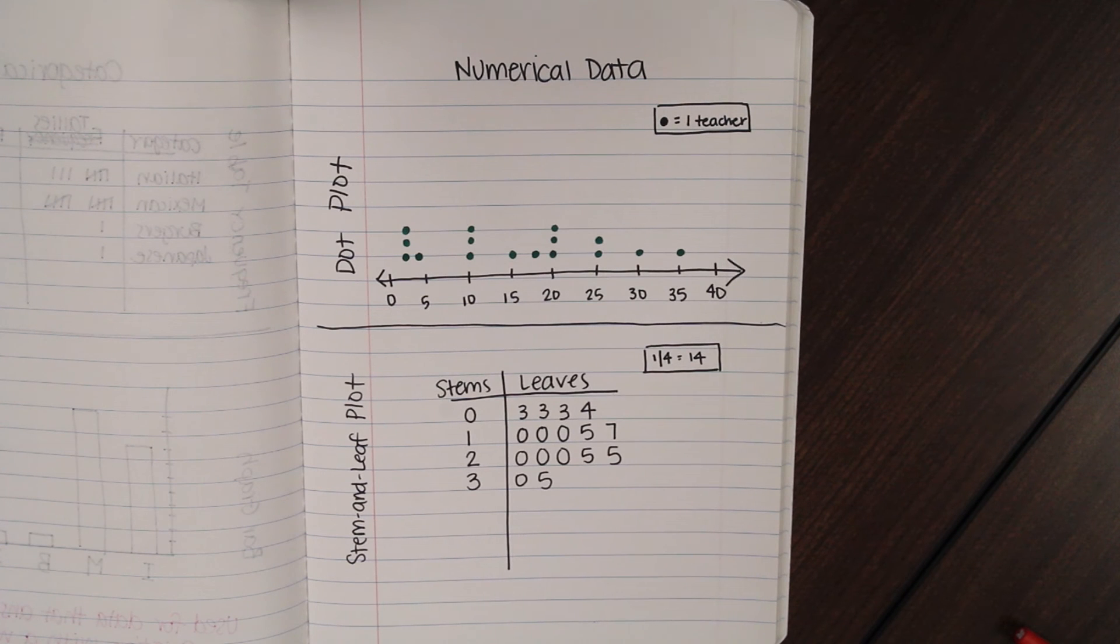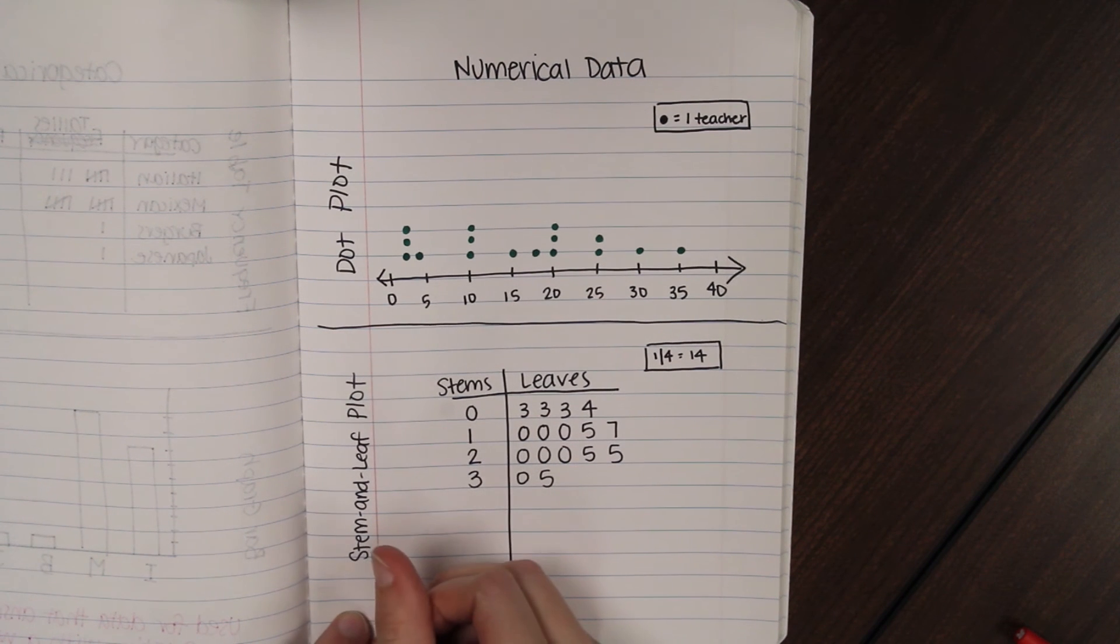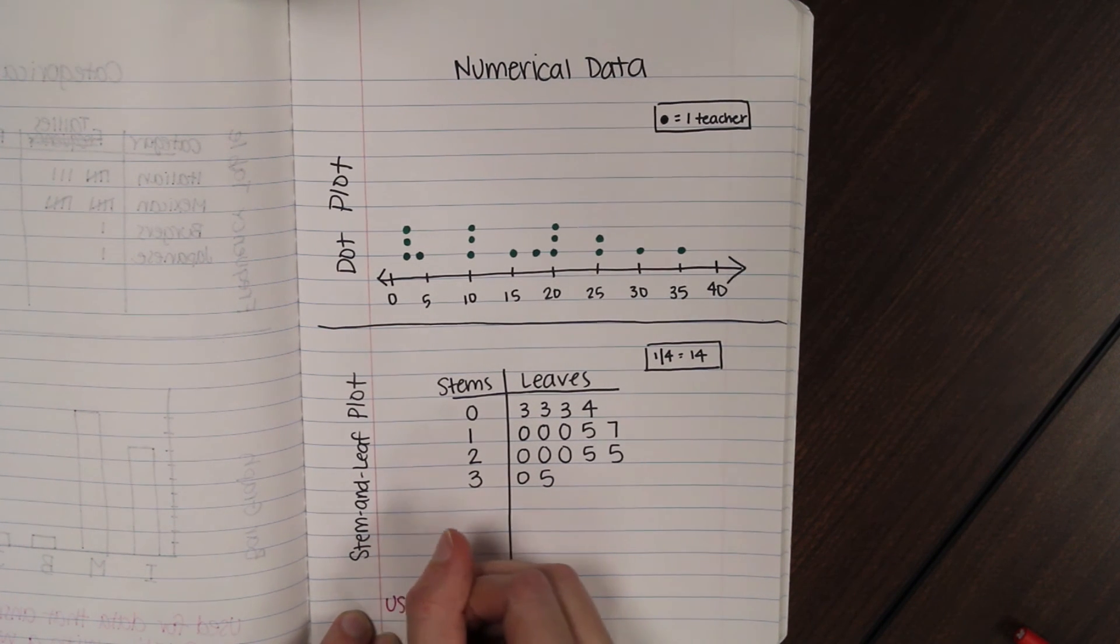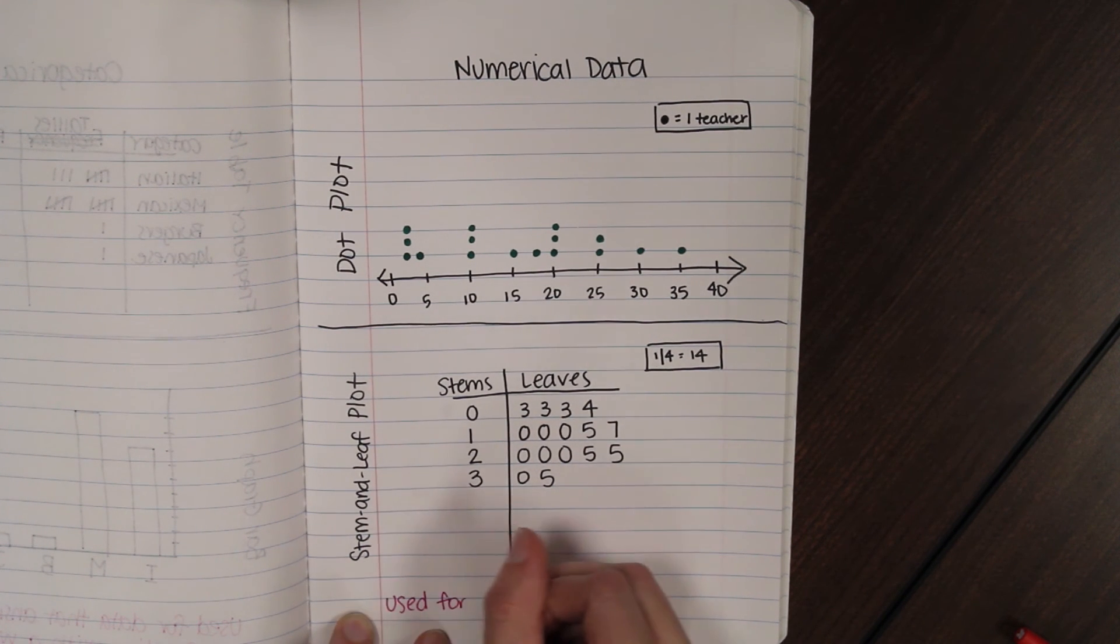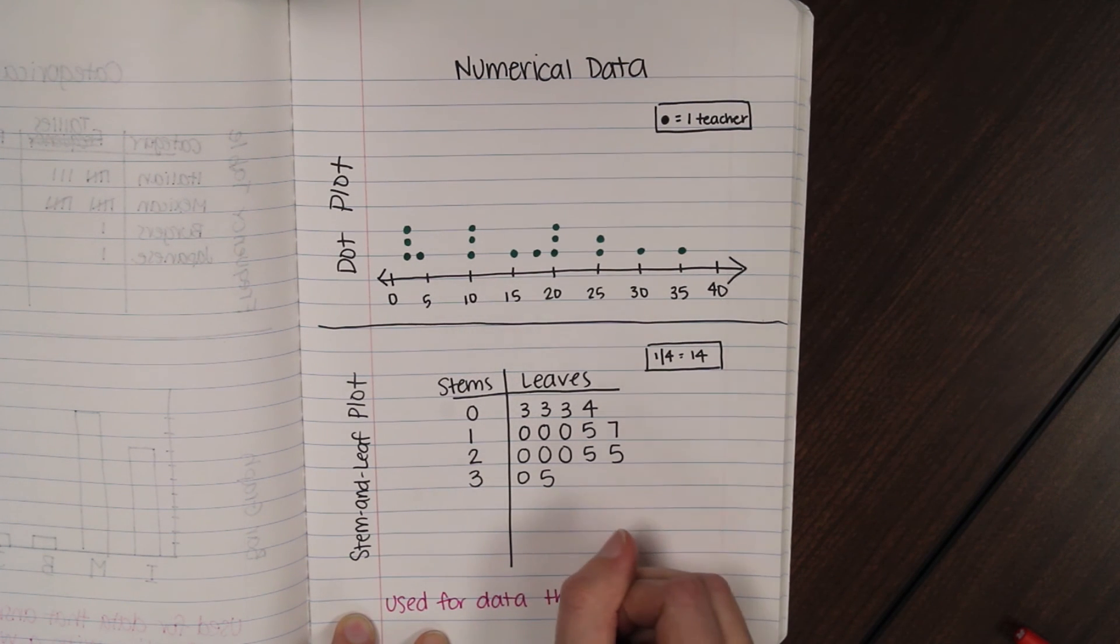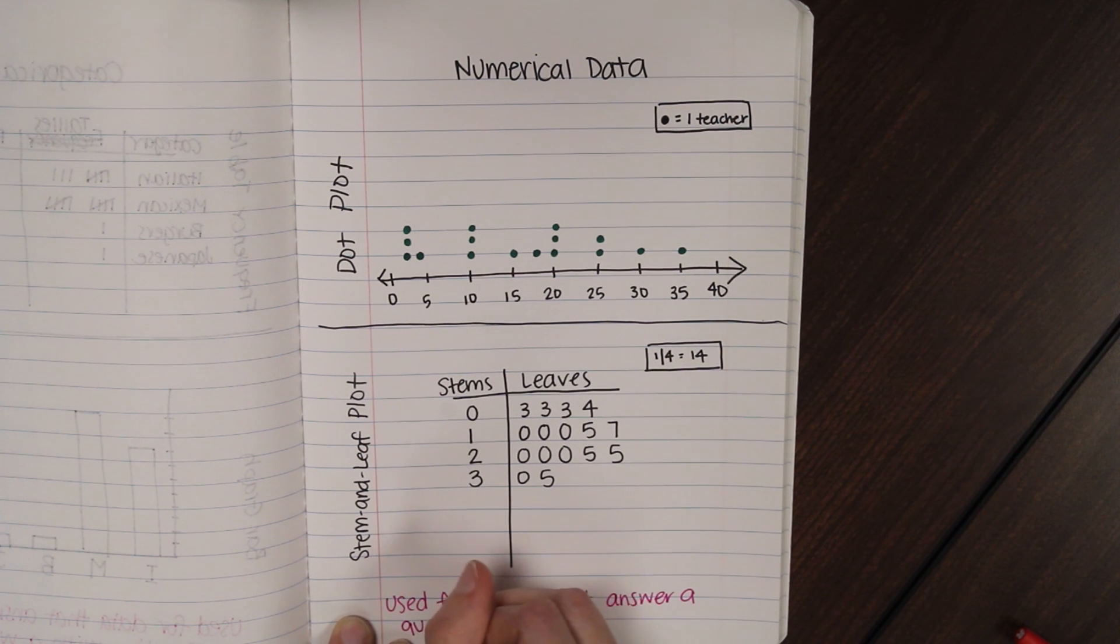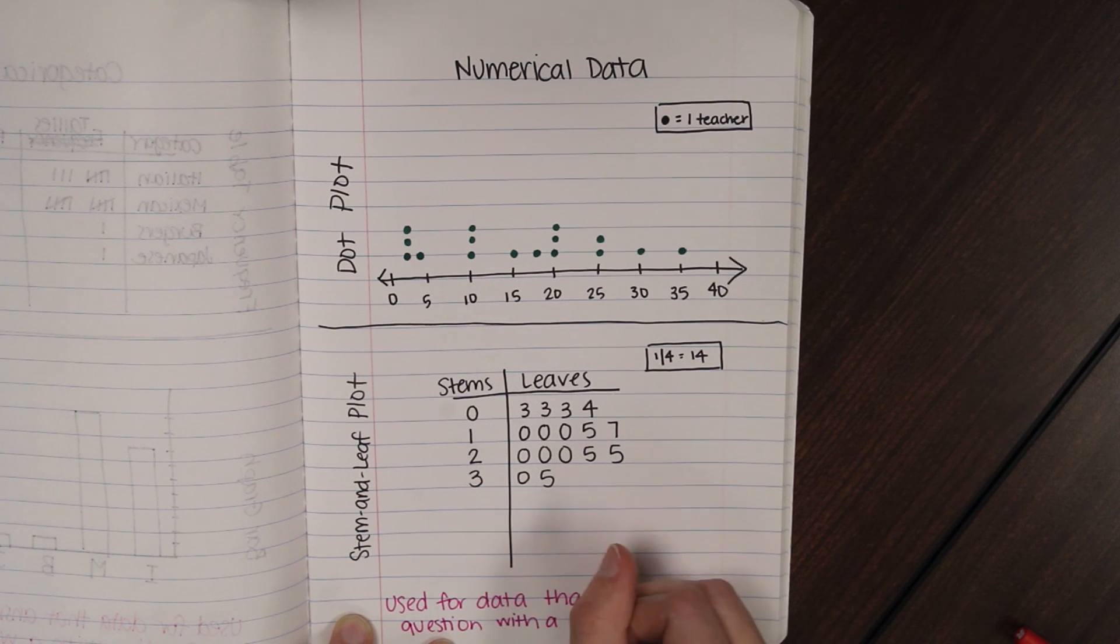All right. So, that's an example of some numerical data graphs, dot plot, and a stem and leaf plot. A little note at the bottom. These two are used for data that answer a question with a number. Not a word.